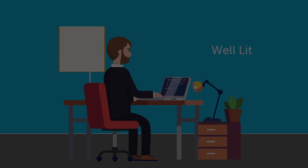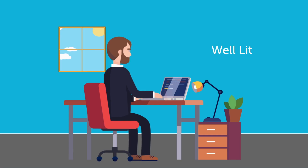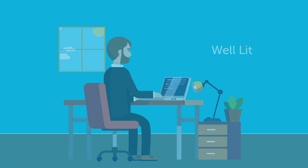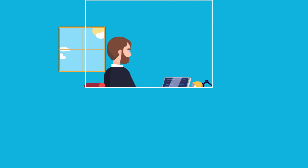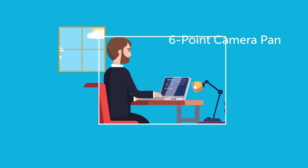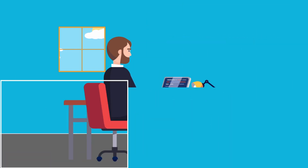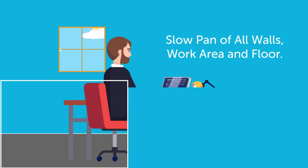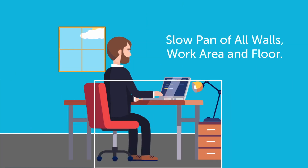The area should be well lit so your proctor can see you clearly. Your proctor will ask for a six-point camera pan of the testing environment. This includes a slow pan of all walls in the room, the desk or table, and the floor around the work area.